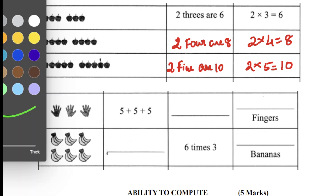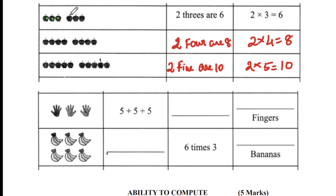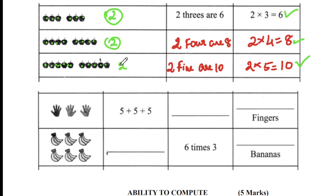Let me change the color to brighter and count to show you. Counting the first group gives six, the second group gives eight, and the third group gives ten. So we have two pairs, and in each pair we have different numbers — three apples, four apples, and five apples. Two groups with different numbers.